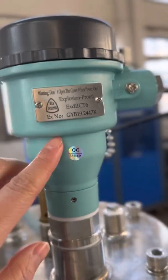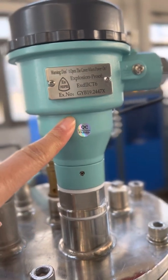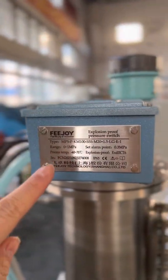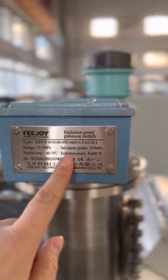This one is the sensor for the liquid level of cooling liquid, explosion-proof. And this blue one is the sensor for the pressure, explosion-proof.